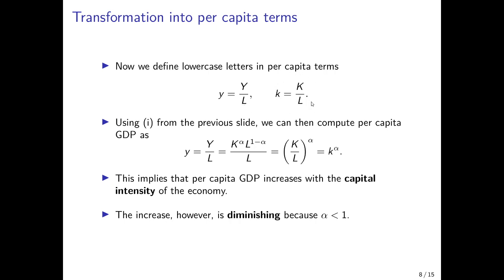Using the aggregate production function, we can compute per capita GDP. Dividing the production function by L, the L terms combine so that per capita GDP equals lowercase k to the power of alpha, where k is capital per worker. This means per capita GDP increases with the capital intensity of the economy — the number of machines available per worker. However, this increase is diminishing because alpha is less than one, so as we accumulate more capital with a constant number of workers, production increases at a diminishing rate.